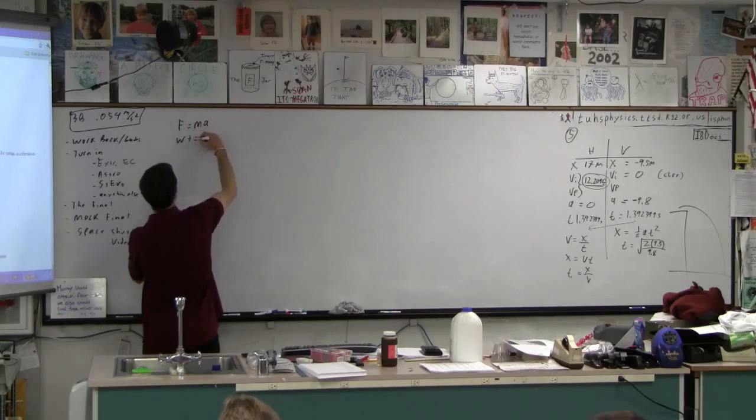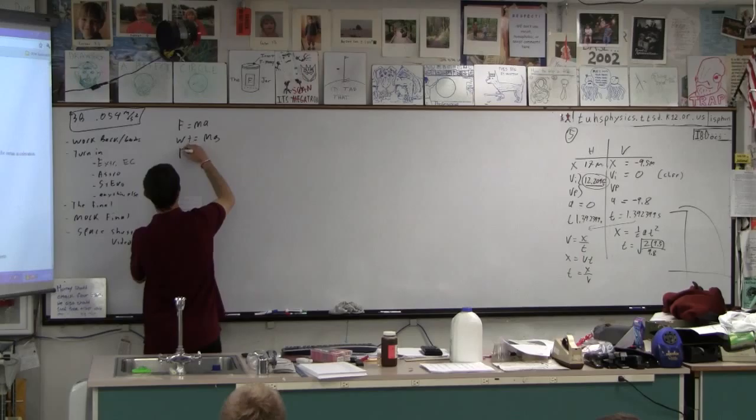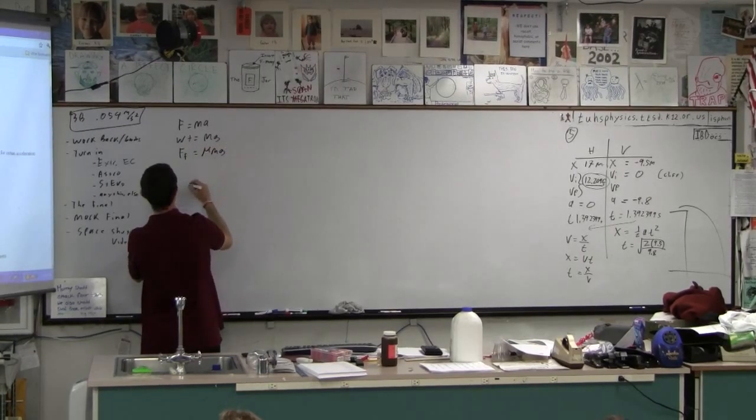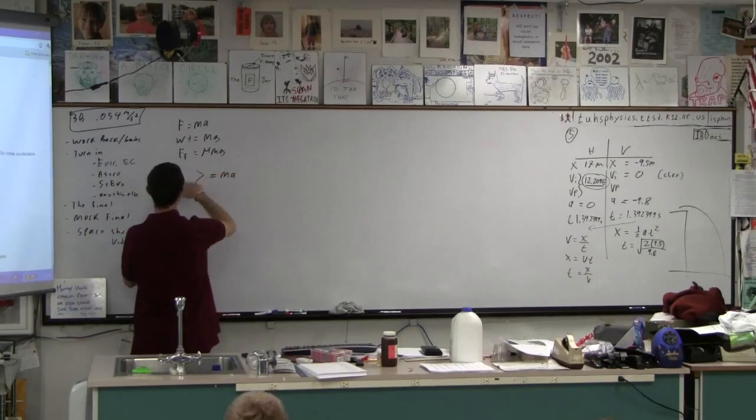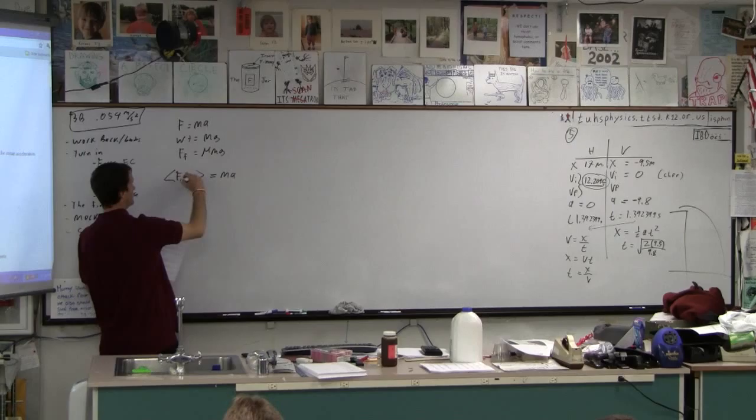We're going to use that weight is M times G, that the force of friction is mu times M times G. And then if there's more than one force acting on some object, then we've got to add those forces intelligently.